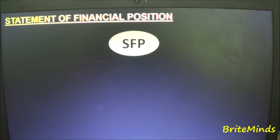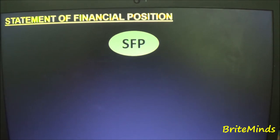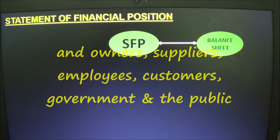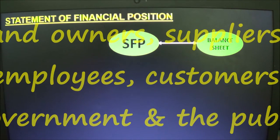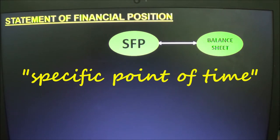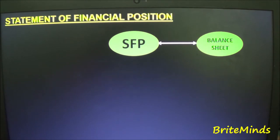The Statement of Financial Position is one of the four financial statements that company management must prepare at the end of the year or period. It is also referred to as the balance sheet. The SFP gives understanding to its financial users — such as investors, creditors, banks, or management — about the financial status of the business at a particular point in time. Take note of the phrase 'particular point of time' — it acts as a snapshot of the financial position of the company.